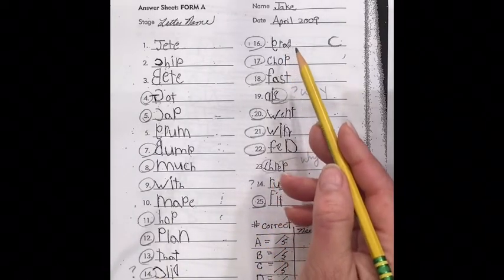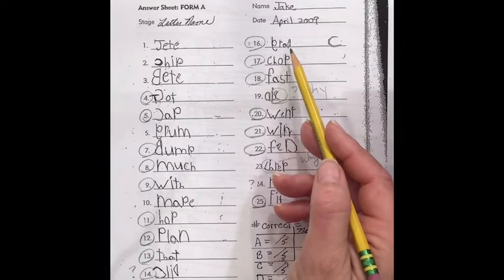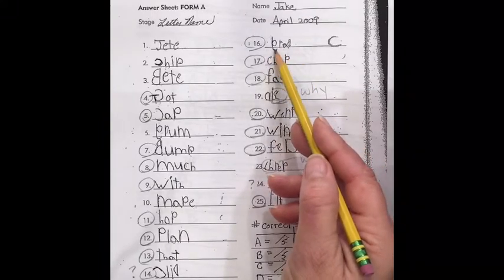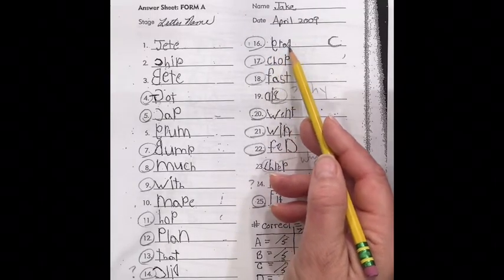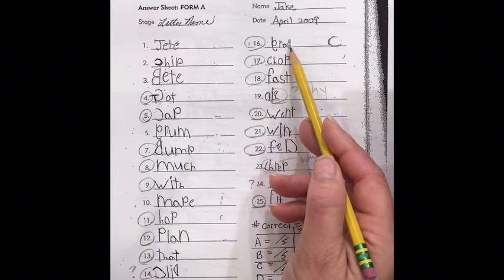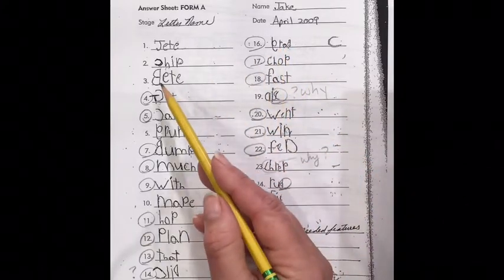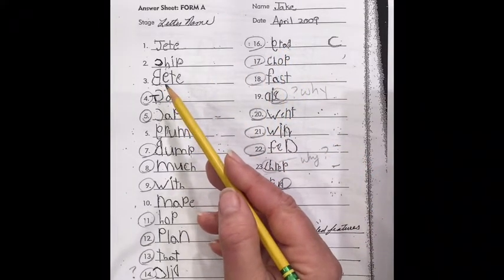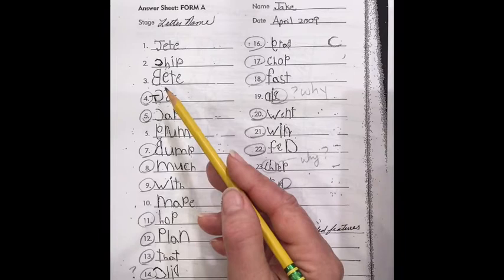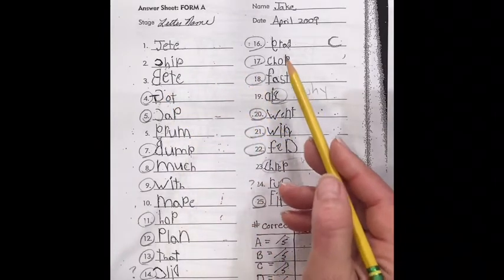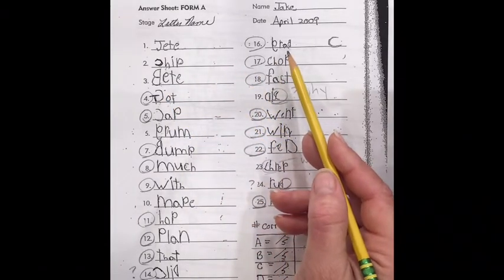As we're going down here, grab, we have some reversed letters, but the reverse G and the reversed capital B do not become other letters. Now it's interesting that he's using this capital B multiple times, and that often is when a child's not sure how to form the lowercase, they might use the uppercase. So that would be something we would want to teach Jake.